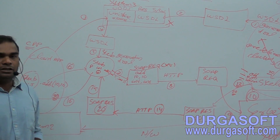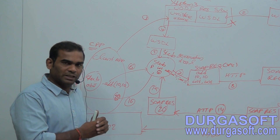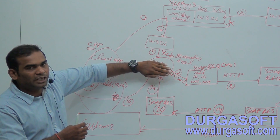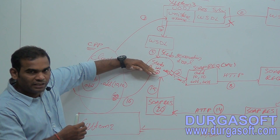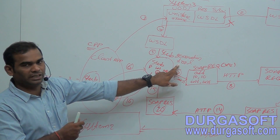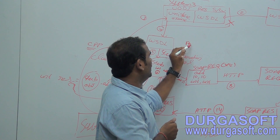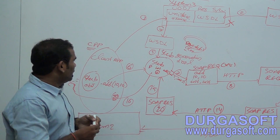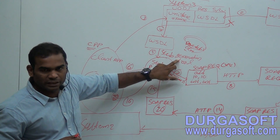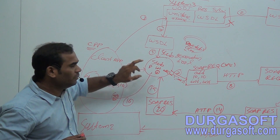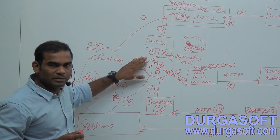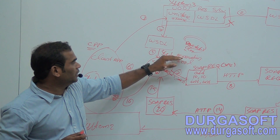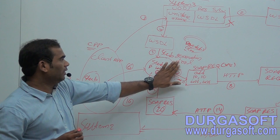Coming to the client side: to develop a client application we mainly need the stub. The stub is not a predefined class you can use directly — you need to generate it from the WSDL file using a stub generation tool. The stub generation tool is a predefined class. If the client application is developed in C++, the stub generation tool should be a C++ class and will generate the stub as a C++ class. If the client application is Java, the stub generation tool should be a Java class and generates the stub as a Java class.